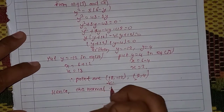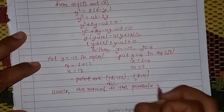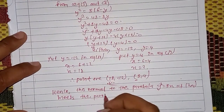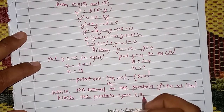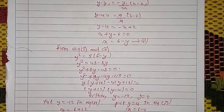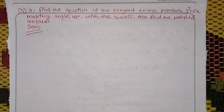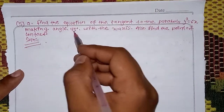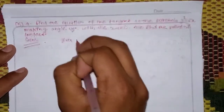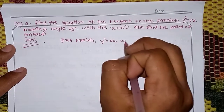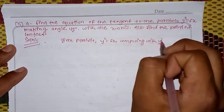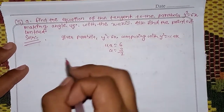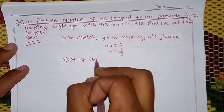The next problem: find the equation of the tangent to the parabola y²=6x making an angle of 45° with the x-axis. Comparing y²=6x with y²=4ax gives 4a=6, so a = 3/2. The slope of the tangent: tan 45° = 1, so m = 1.